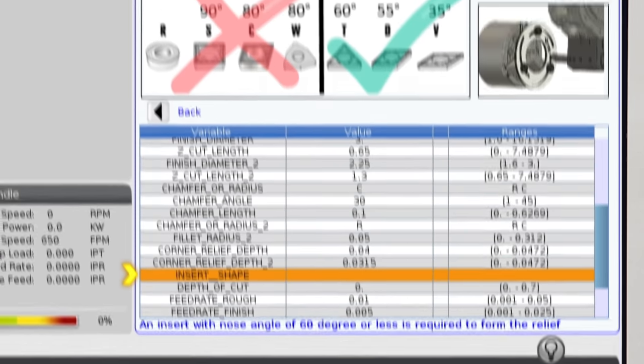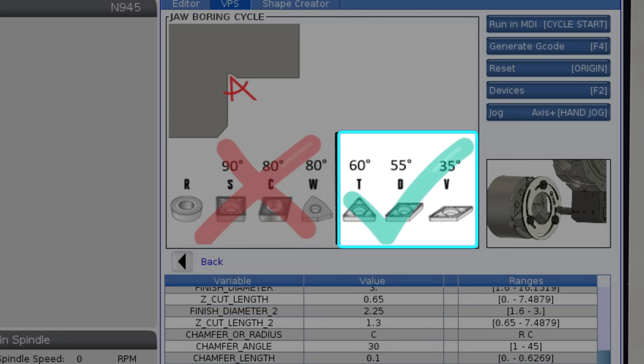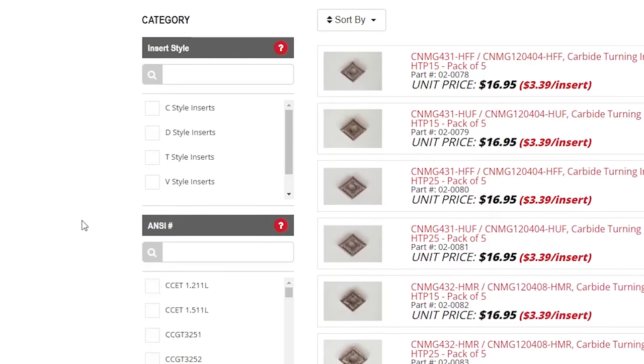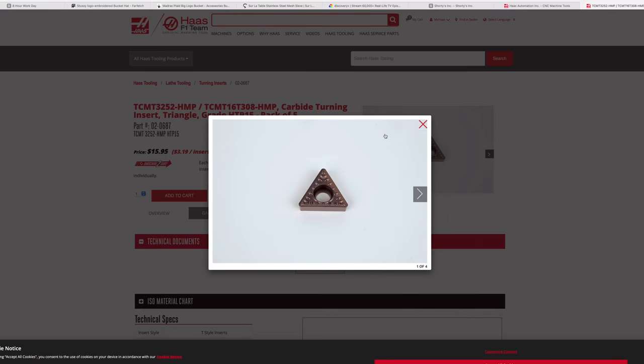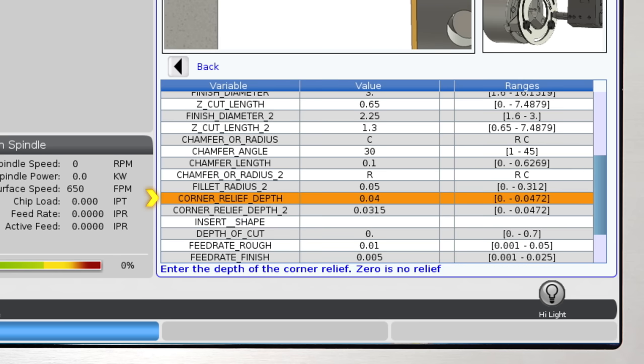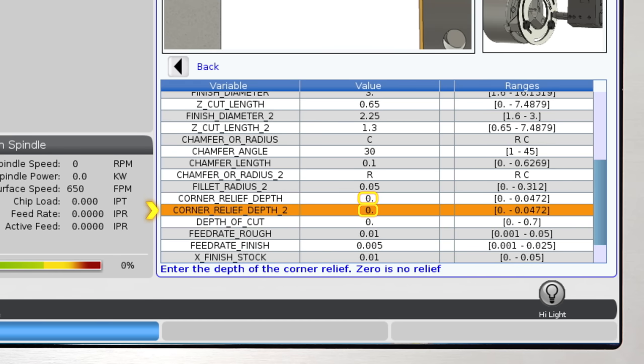The next row is a display only page showing the user which standard lathe insert shape is required to form the corner reliefs. It also shows which inserts are unable to form the reliefs. That's why earlier on the haastooling.com page, I chose the T-shape insert. If the nose angle of your insert is greater than 60 degrees, then set the values of the previous two rows to zero. This will remove the relief from the profile.